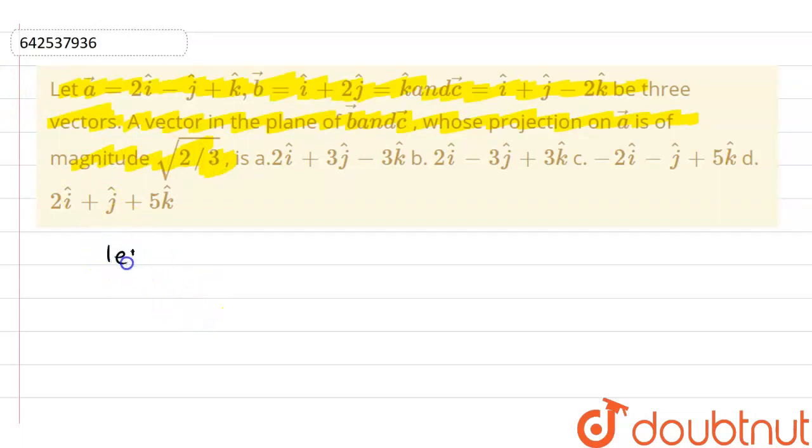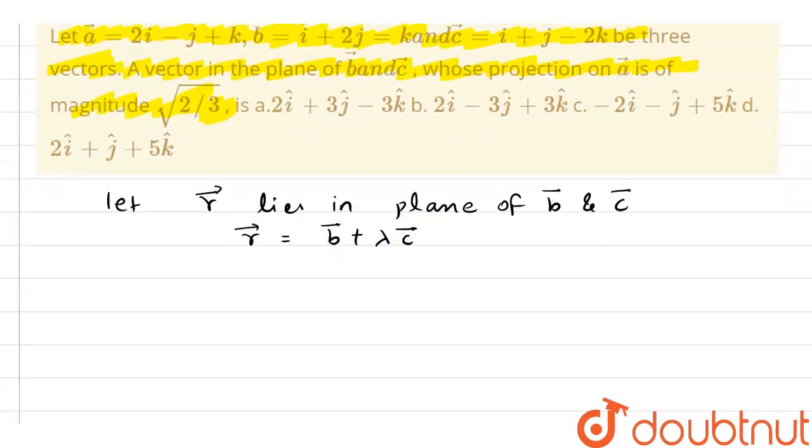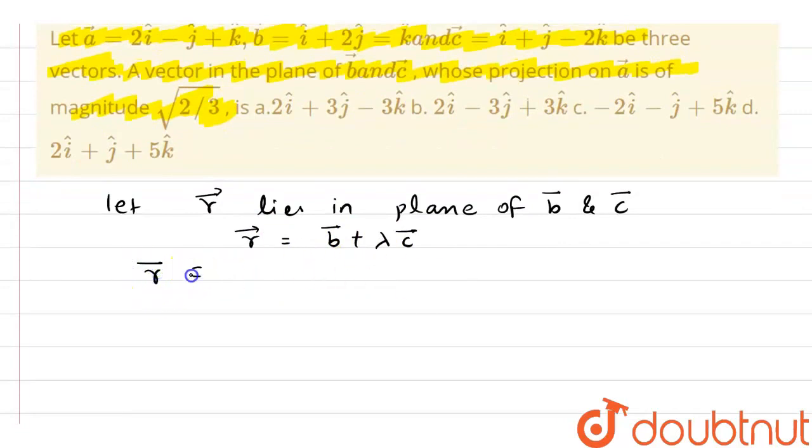Now, let's suppose that r vector is a vector lying in plane of b and c. It means I can say vector r can be written as b plus lambda c. So what is my vector b, that is i cap plus 2j cap minus k cap plus lambda times c.